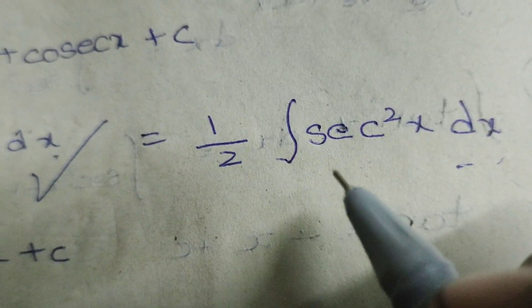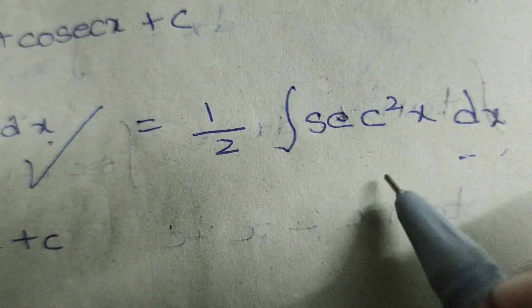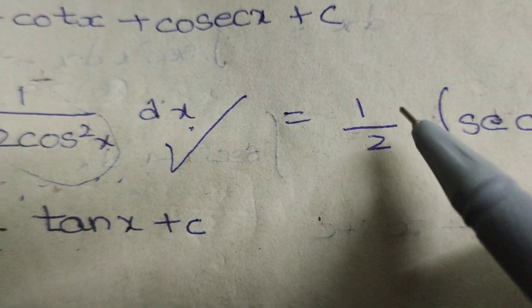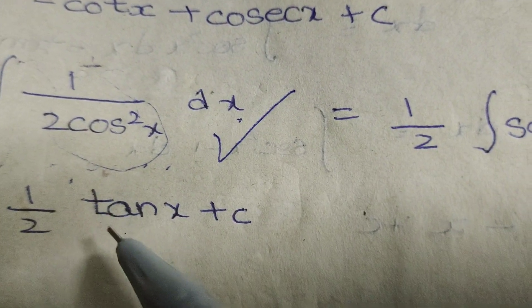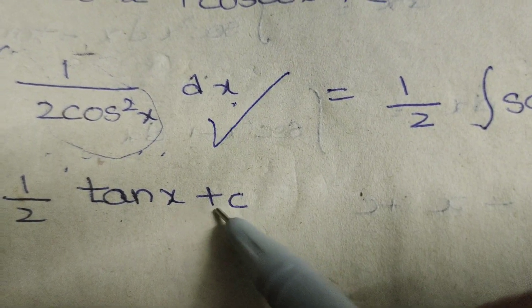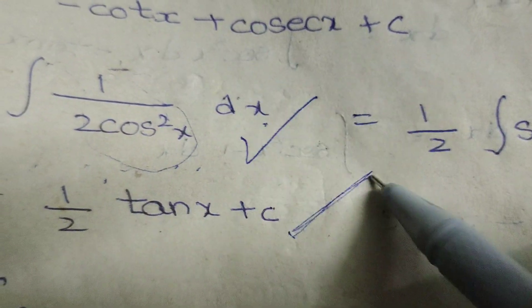What is the integration of secant square x? Formula: tan x. So, 1 by 2, here I write as it is tan x. After integrating, adding the constant plus C. This is the solution.